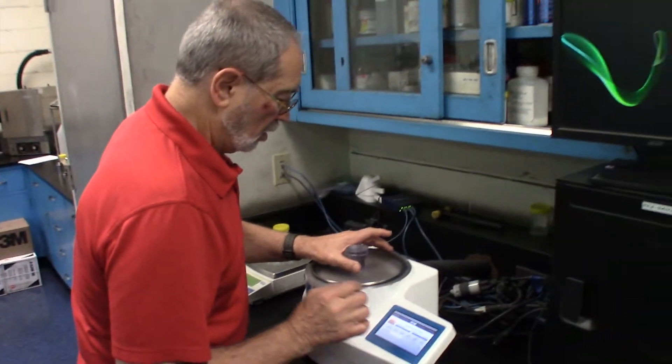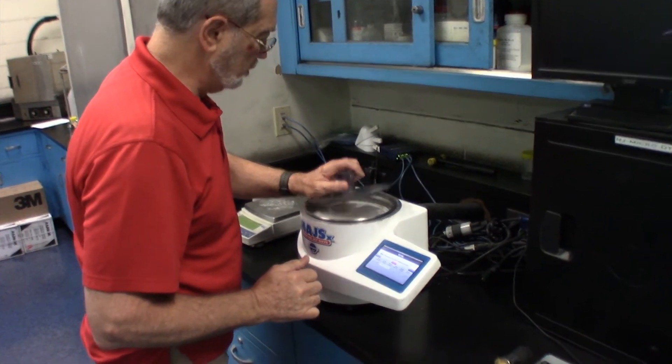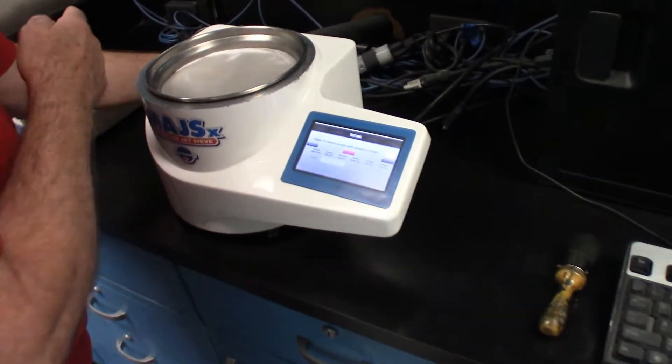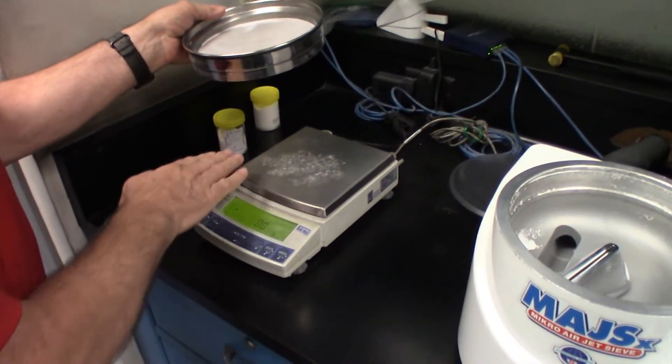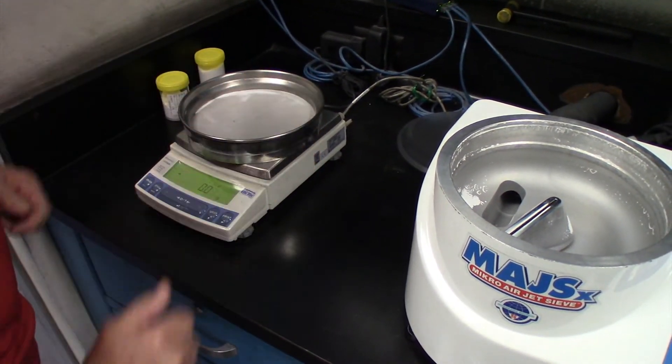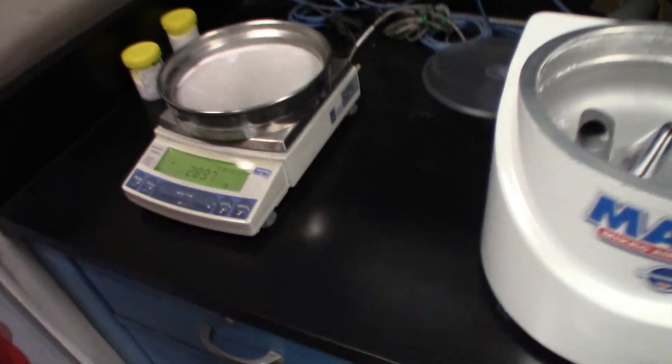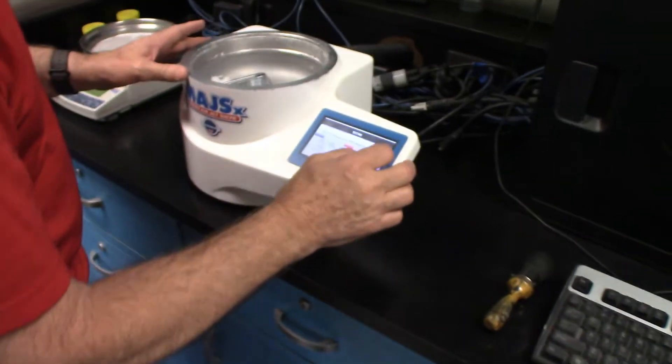Now that the air and the distribution of the material has stopped, we're going to press the next button, which activates the balance. We will take the sieve screen out, place it on the tared balance. Notice there's a slight powder on here. That doesn't matter because the balance has been tared. We're now going to take the weight and accept that weight.